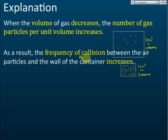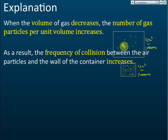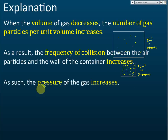As a result, the frequency of collision between the gas particles and the wall of the container increases. The particles are in constant motion — they collide with the wall and bounce back. Because the volume is smaller and the number of gas particles per unit volume is higher, the gas particles collide with the wall more frequently. Before compression it may collide one million times per second; after compression, three million times per second, because there are more particles per unit volume.